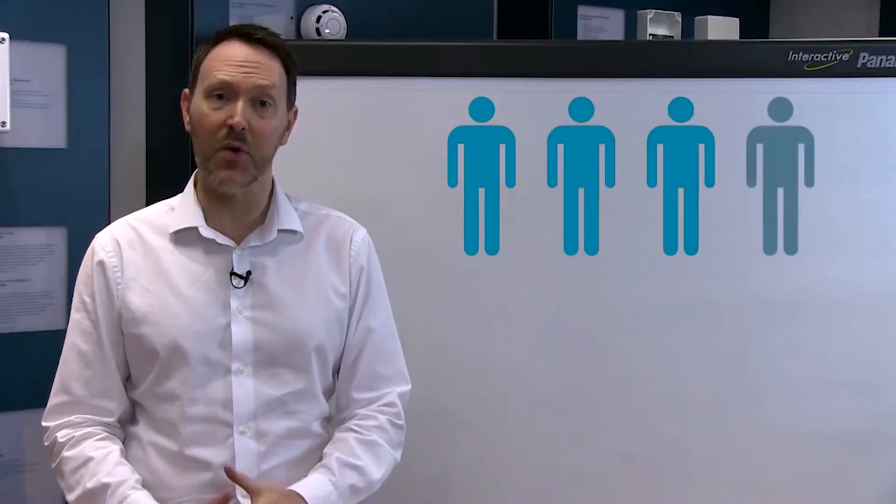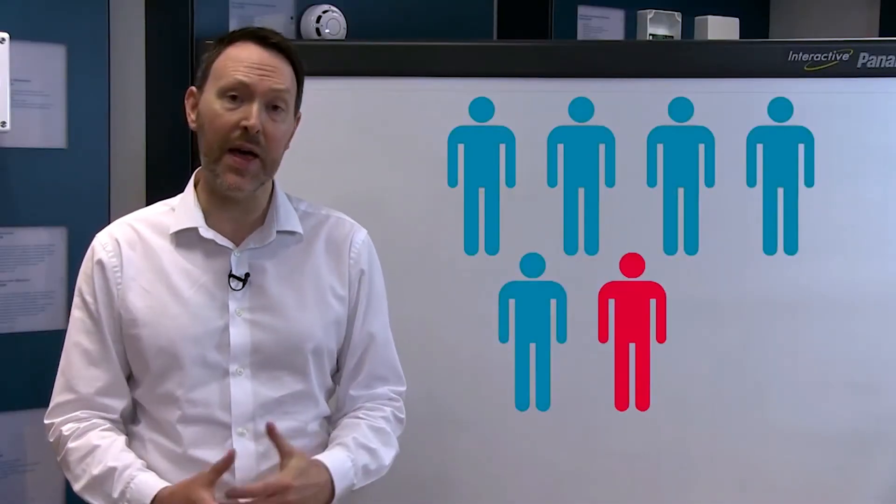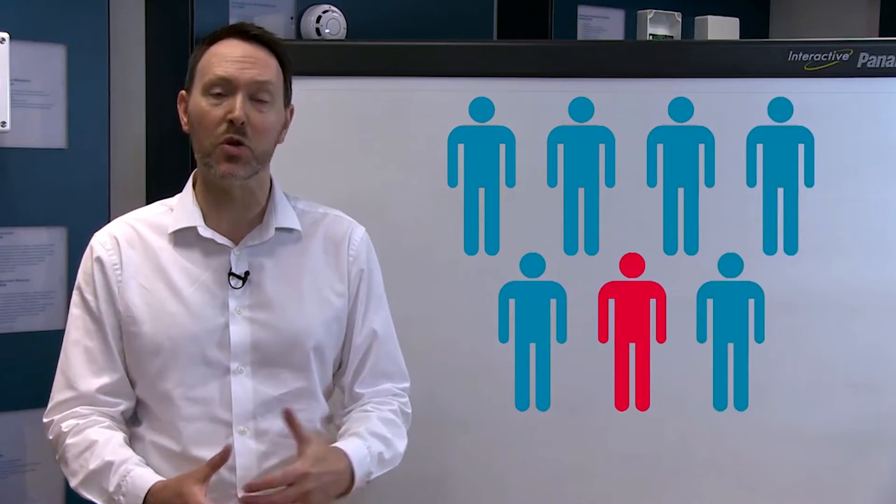Hi and welcome to this video about our EN54 part 23 compliant visual alarm devices, or VADs. One in seven people in the UK are deaf or hard of hearing, and they, as well as those who work in noisy environments such as factories, require a visual signal as well as an audio warning in the event of an alarm.